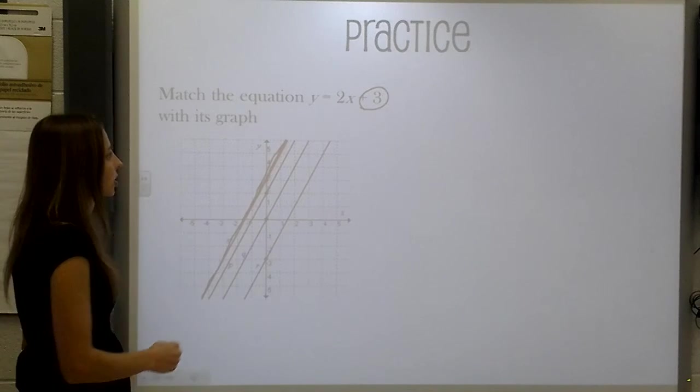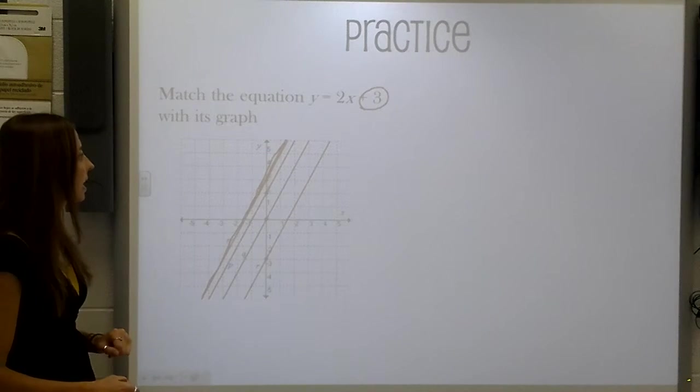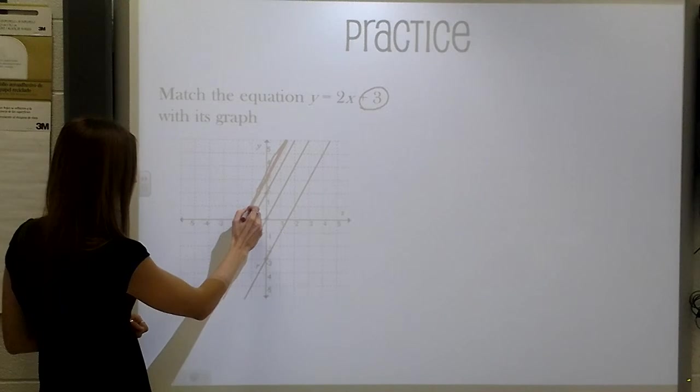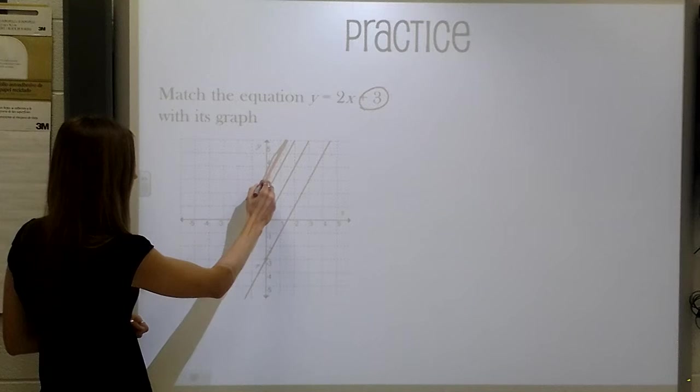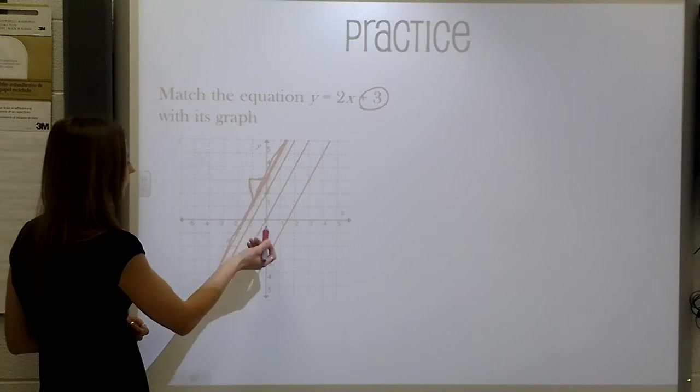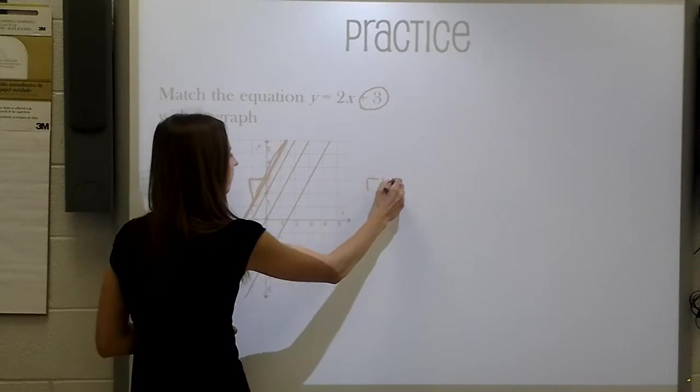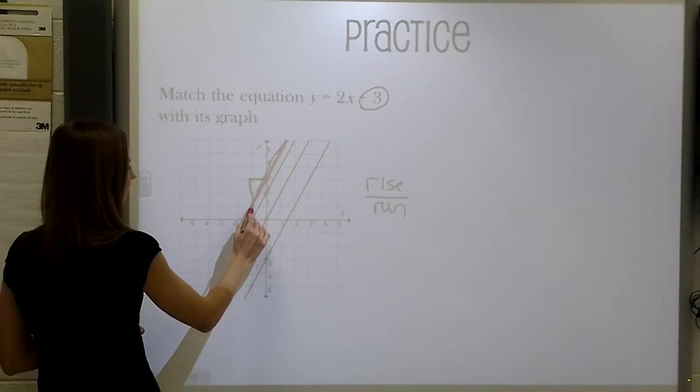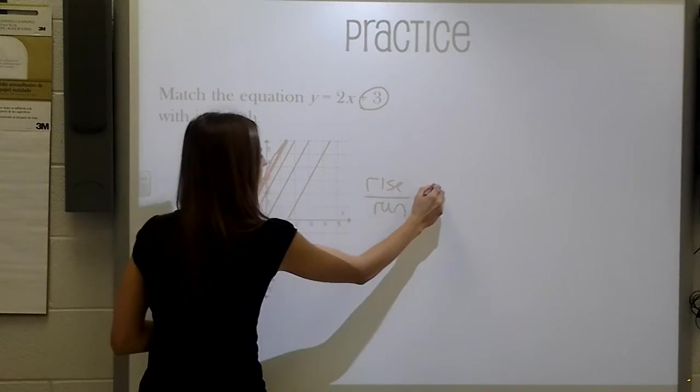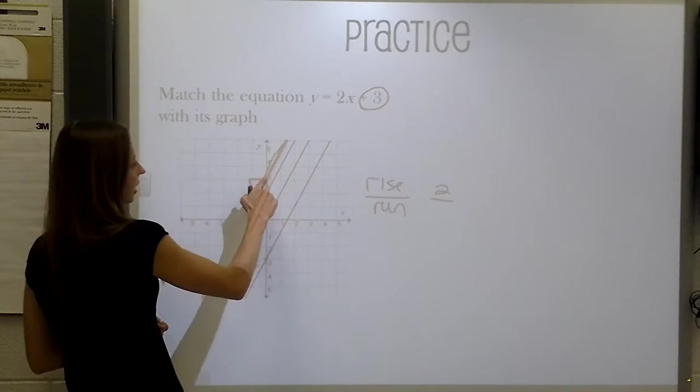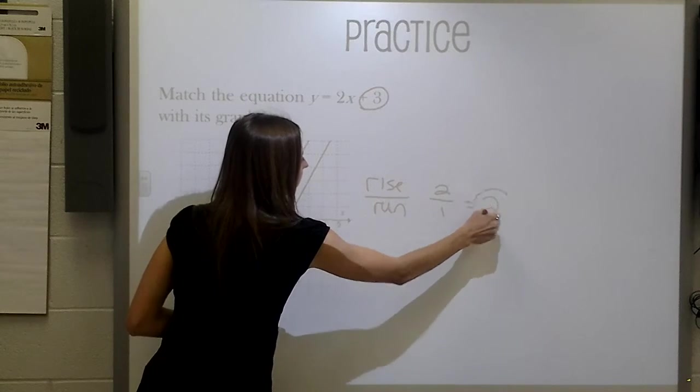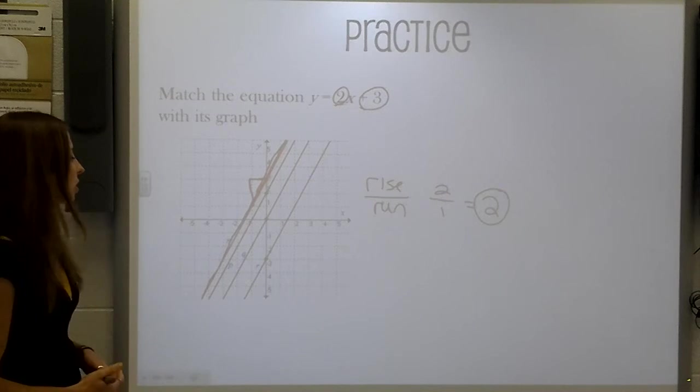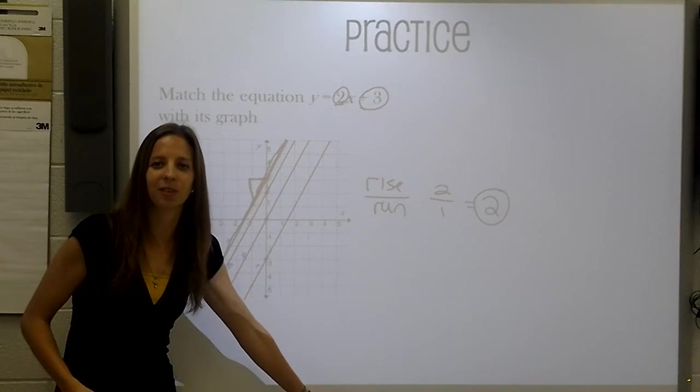If I also needed to, I could determine my slope if I just match up two points on my line. And if I do rise over run, I can see that my rise is 2 and my run is 1. Therefore, my slope is 2, which would match the equation that they provided us. So again, a very easy way to solve this problem.